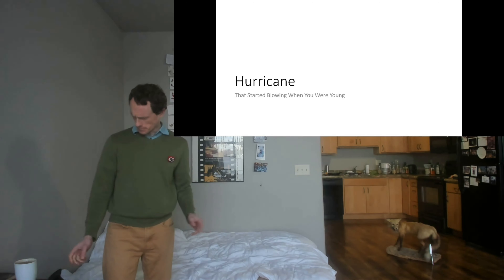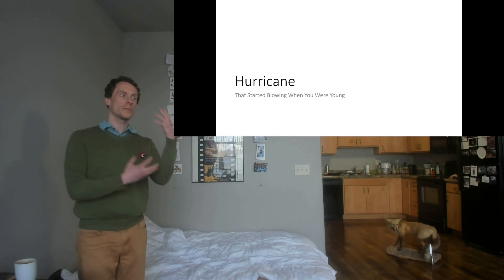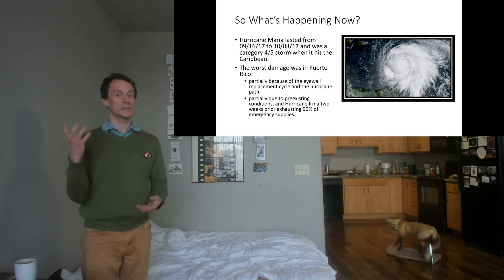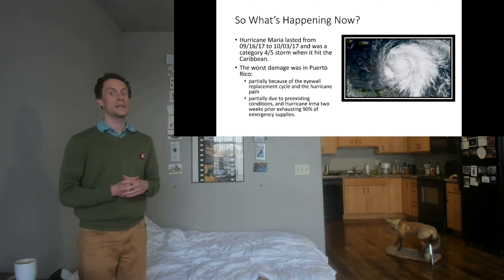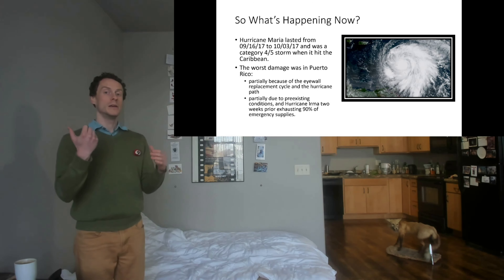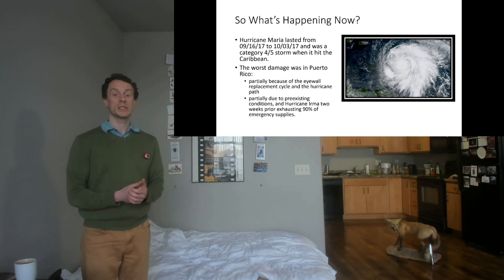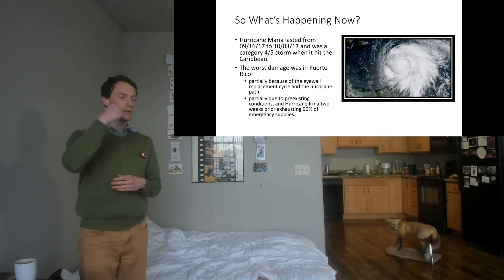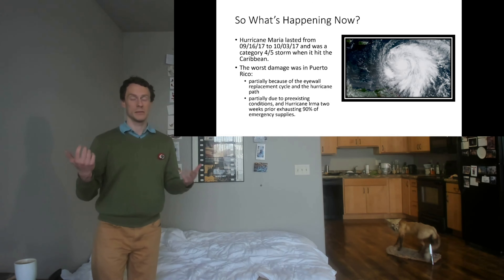Now we're going to talk about an example of how the power of the president can be important during a natural disaster. The example we're going to look at is Hurricane Maria, a 2017 hurricane that struck a lot of the Caribbean and did a lot of its worst damage in Puerto Rico. Puerto Rico was particularly hard hit not just because it was a strong category four or five storm.